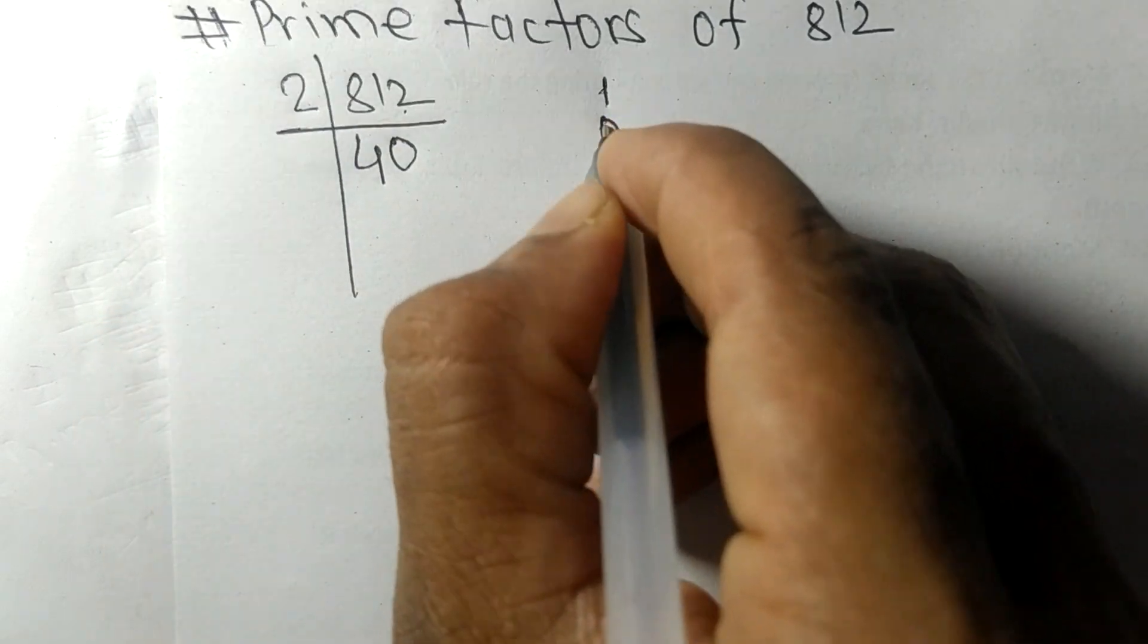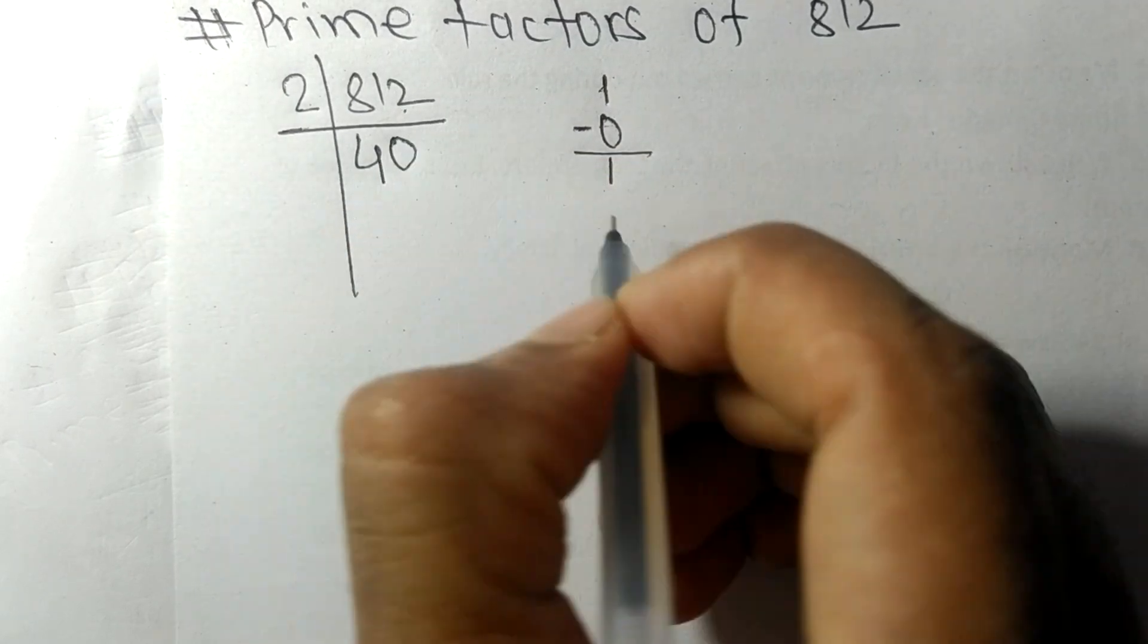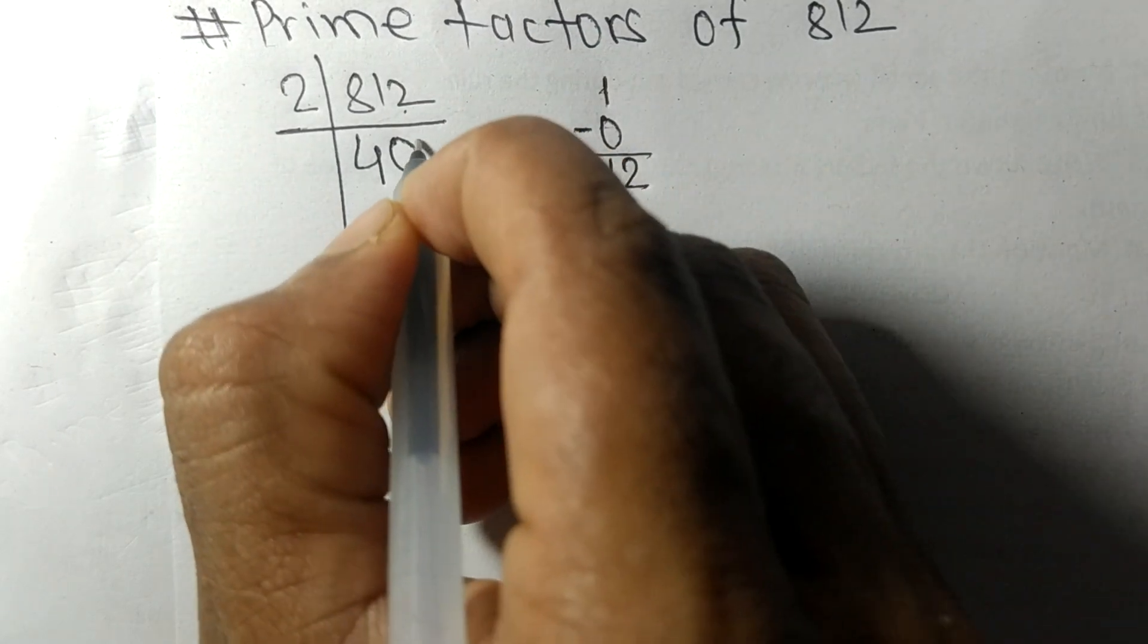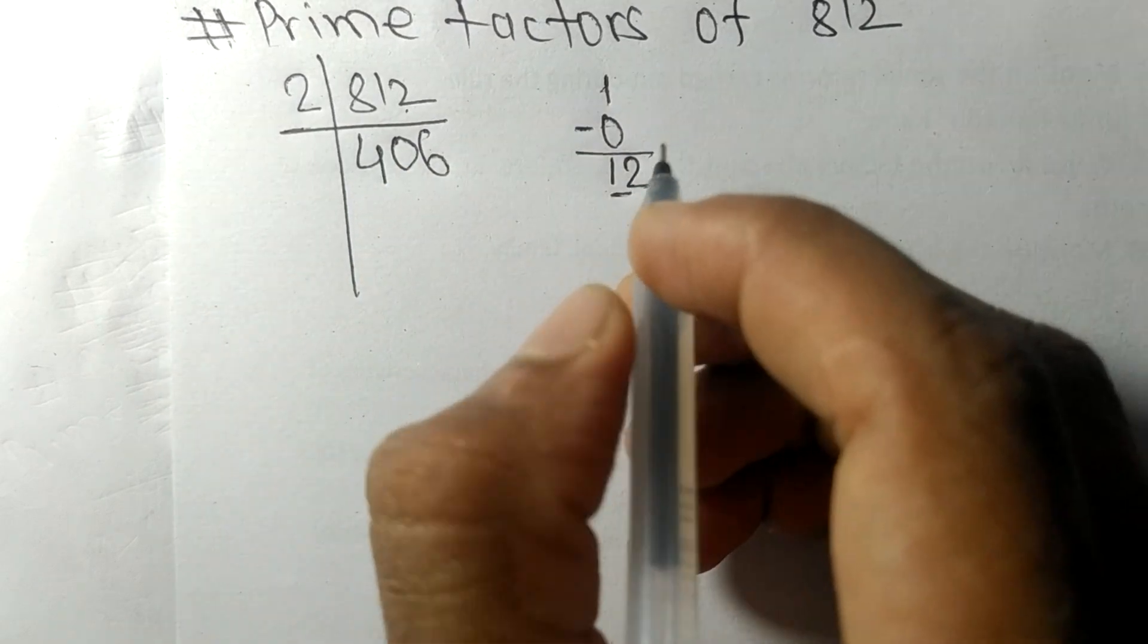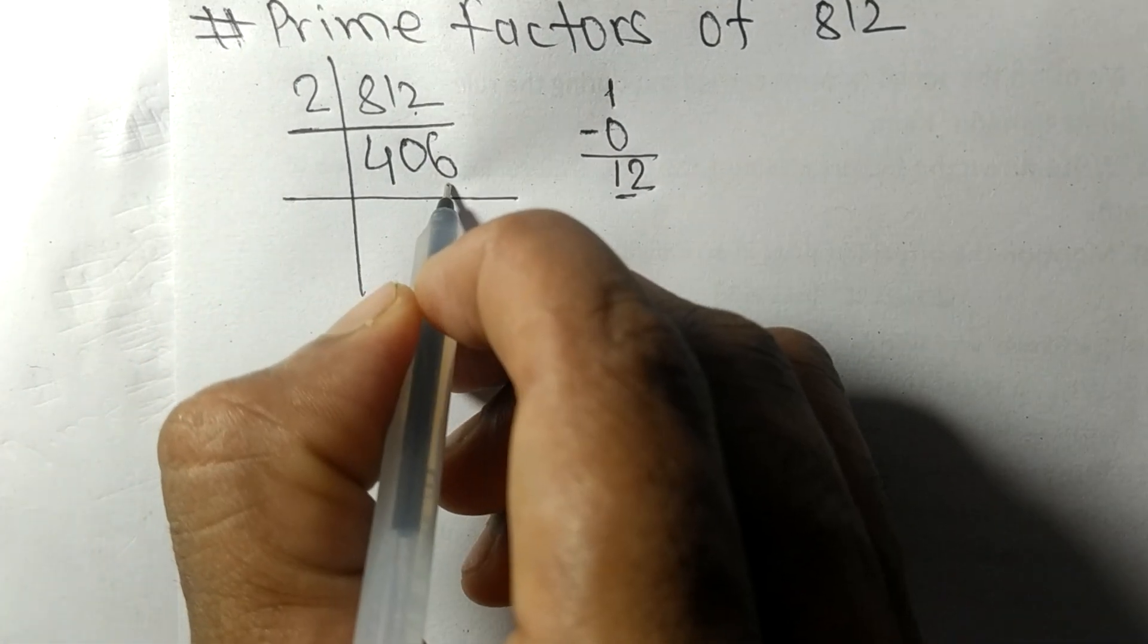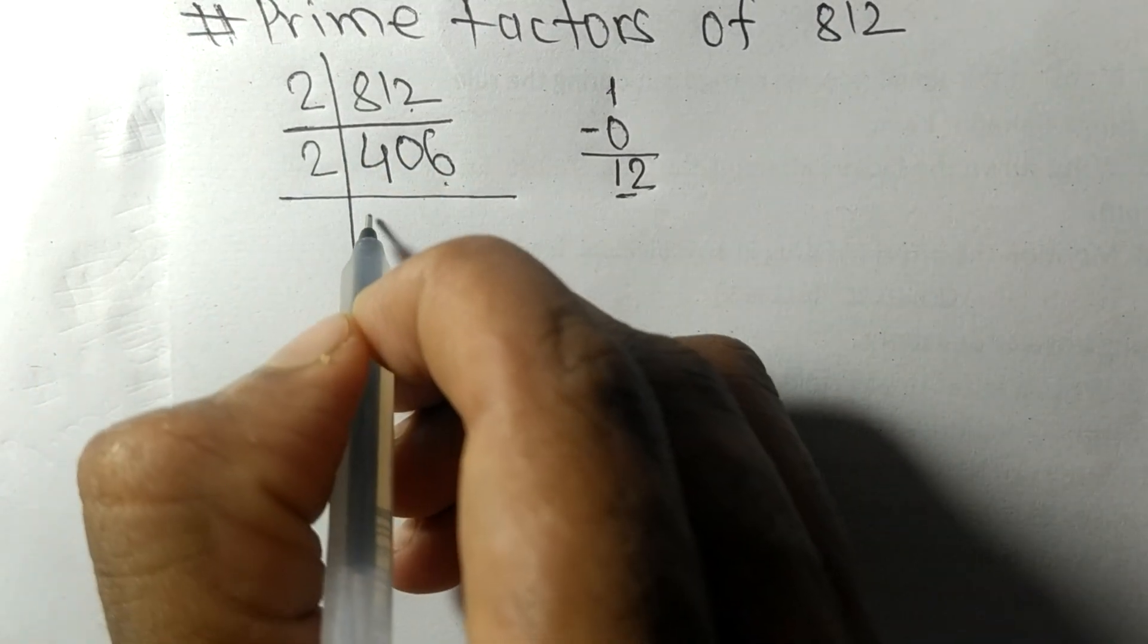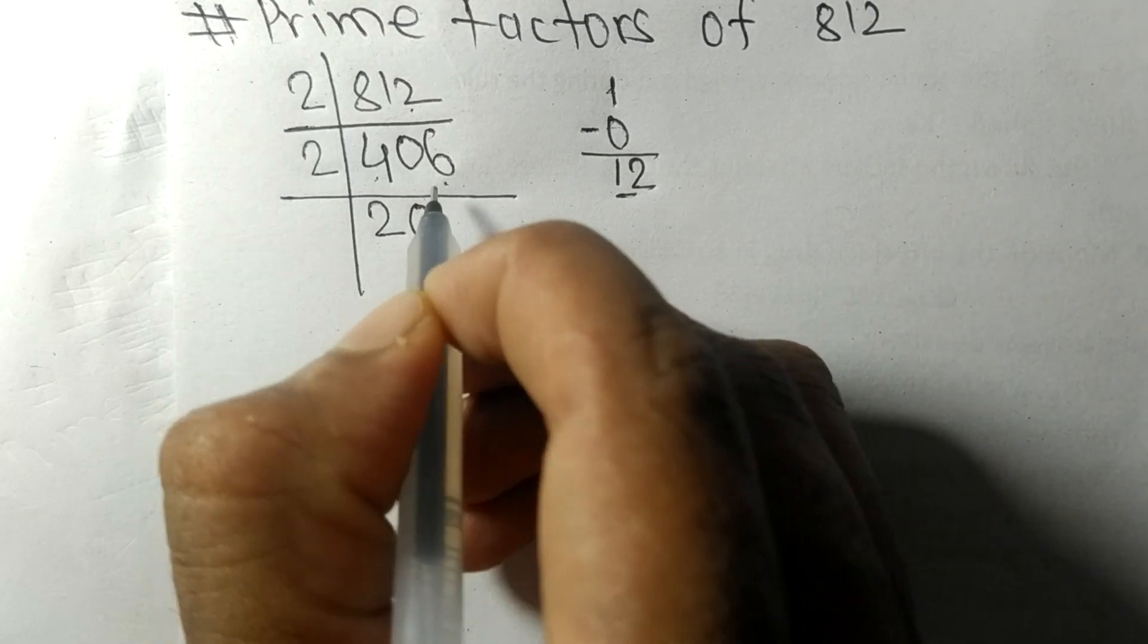So again it has an even number 6 at the end, so 406 is divisible by 2. 2 times 2 is 4, 2 times 0 is 0, 2 times 3 is 6. So now we got 203, which is exactly divisible by 7.